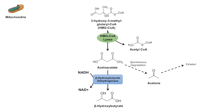So that's the ketone body synthesis pathway. Just remember that the three ketone bodies produced are beta-hydroxybutyrate, acetoacetate, and acetone, with beta-hydroxybutyrate being the most abundant. That was a quick lesson on ketone body synthesis — I hope you found this video helpful. If you like this video, please like and subscribe for more videos like this one. Thank you so much for watching and have a great day.